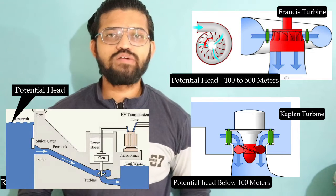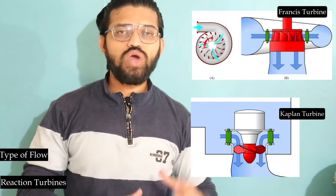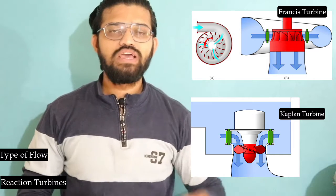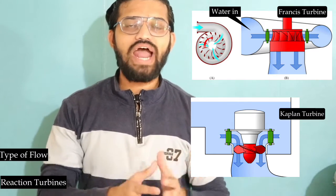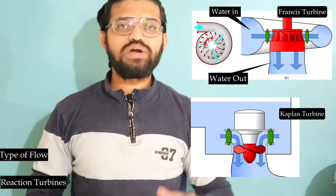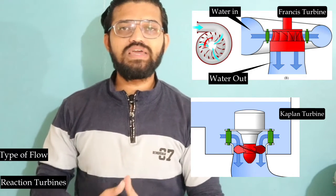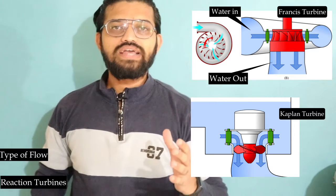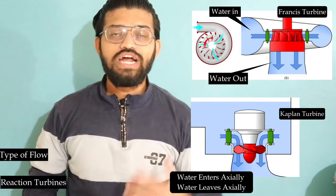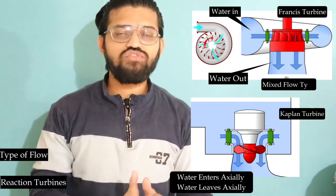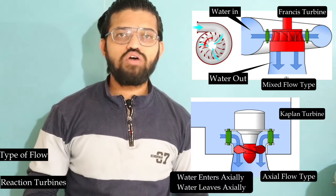If we look at the type of flow and the construction, in the Francis turbine the water will enter in a radial direction and leave axially — making it a mixed flow type of turbine. In the case of the Kaplan turbine, the water enters axially and leaves axially, so it is an axial flow type of turbine.